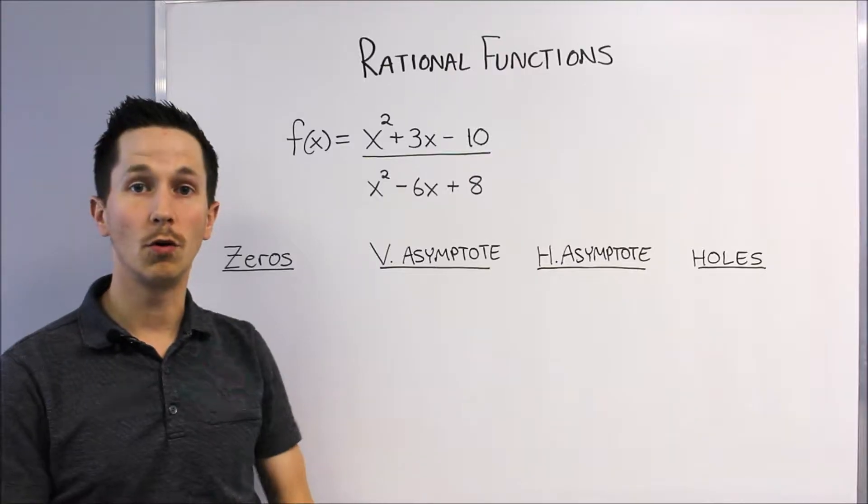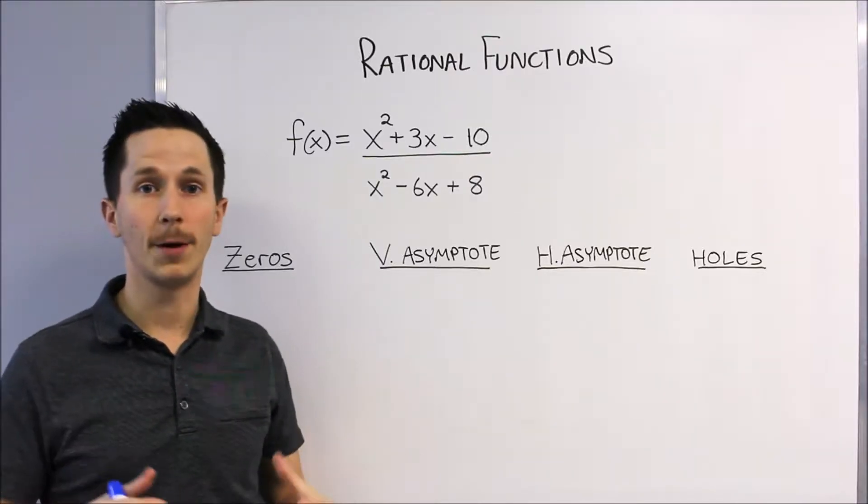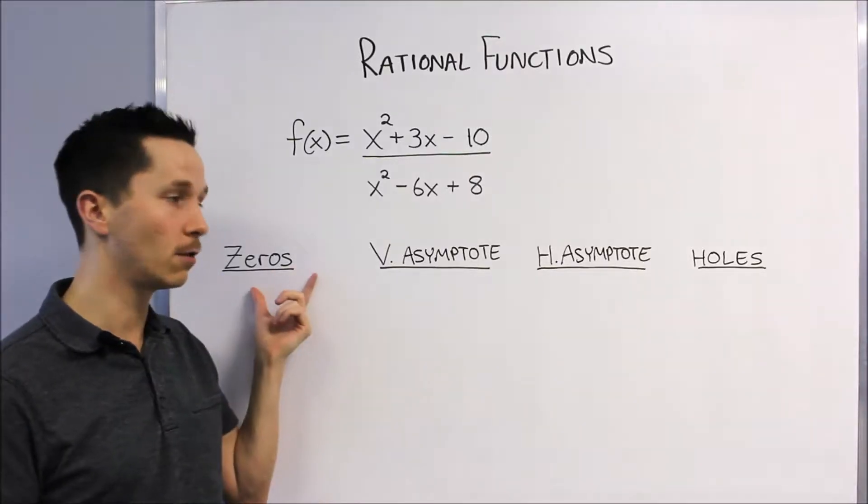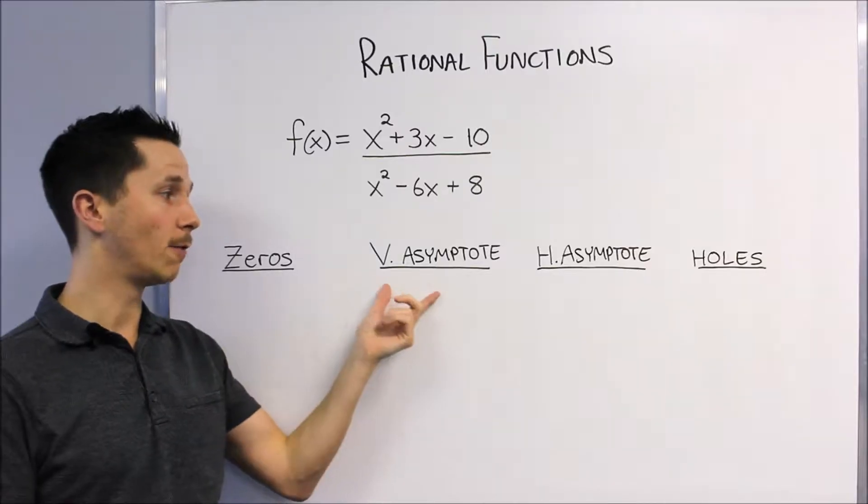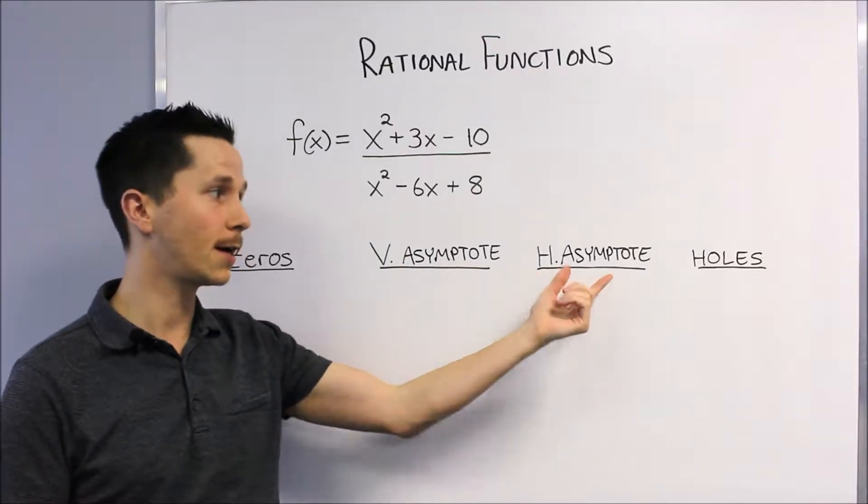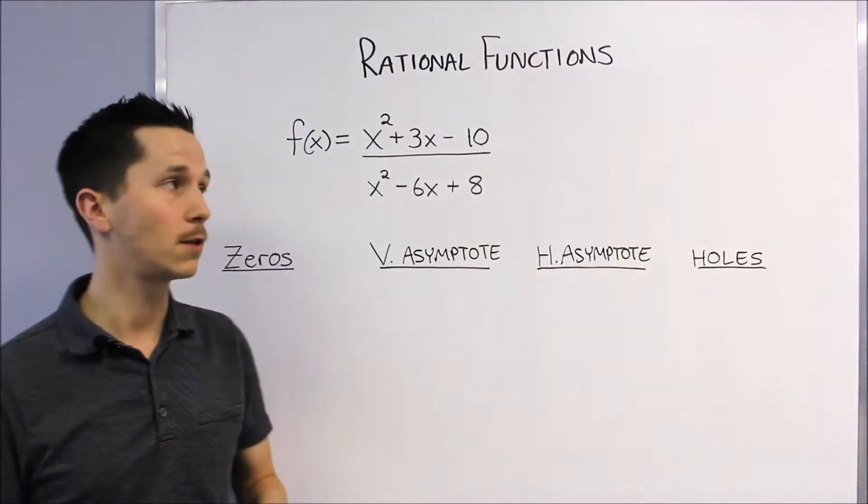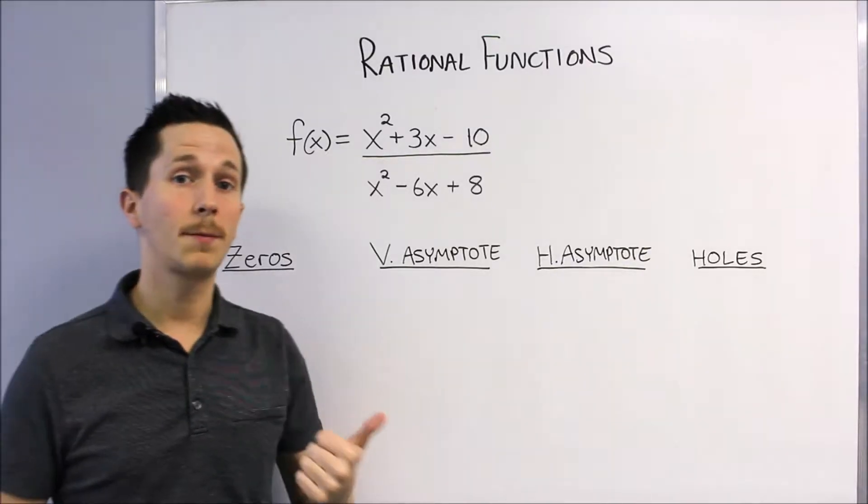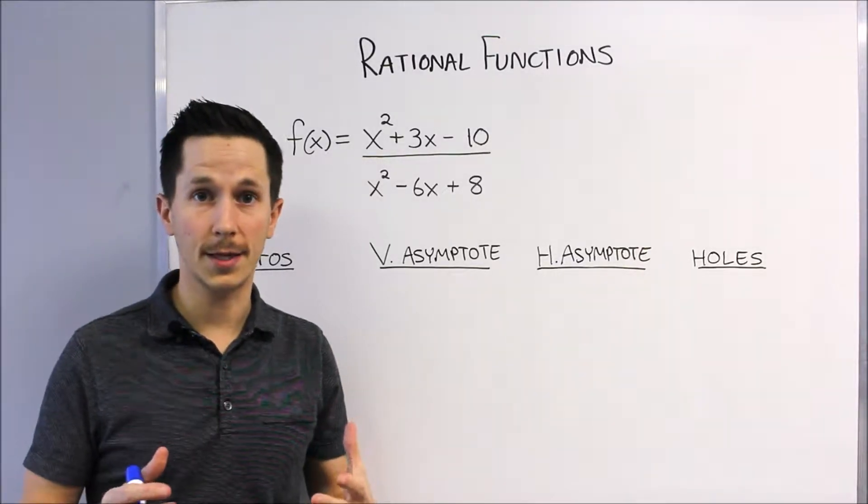These are really the four main characteristics that we need to graph or solve any information about a rational function: the zeros or x-intercepts, the vertical asymptotes, horizontal asymptotes, and the holes in the graph. Just like polynomials, we always want to deal with these things in factored form.